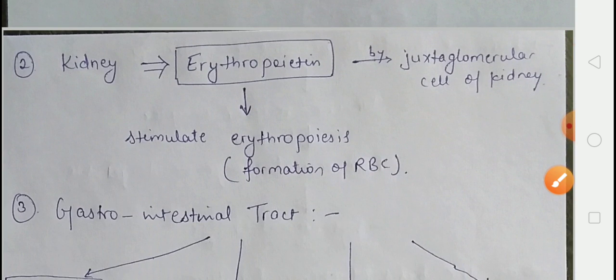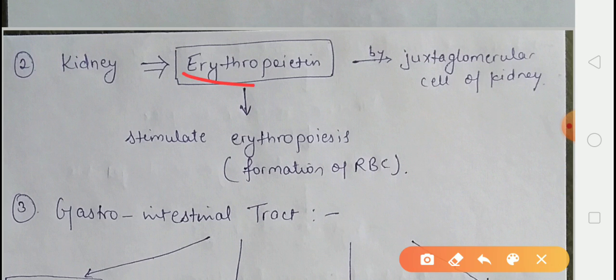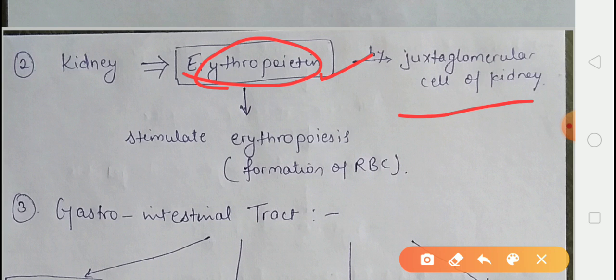Now we talk about the kidney hormone. The kidney produces a hormone called erythropoietin. It is secreted by the juxtaglomerular cells of the kidney.